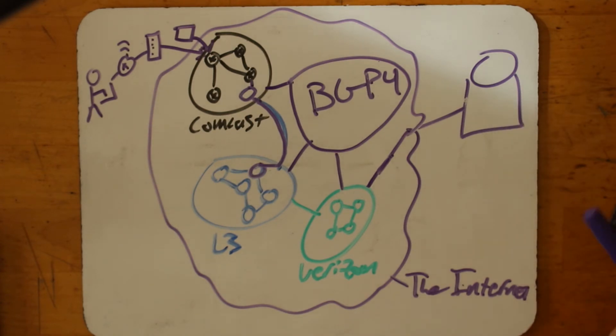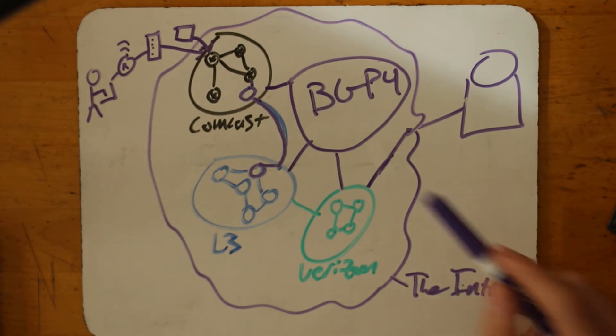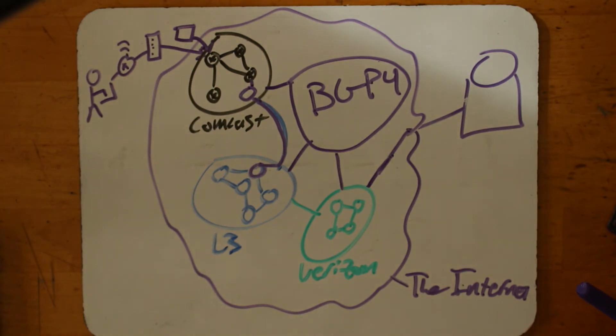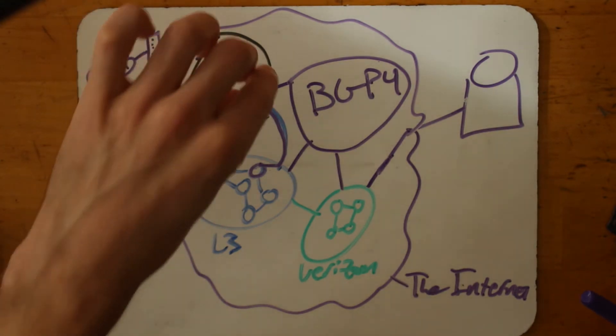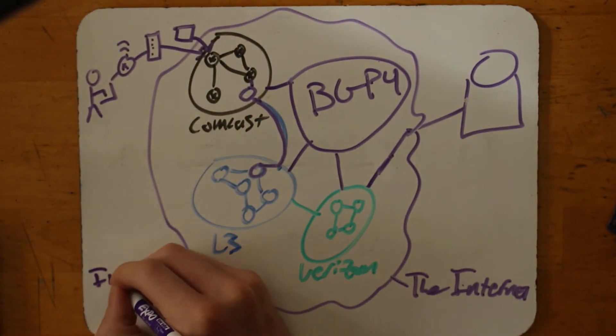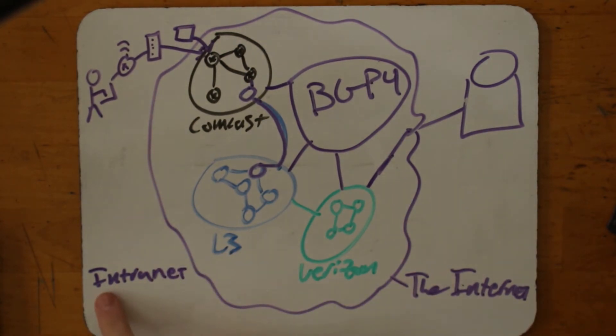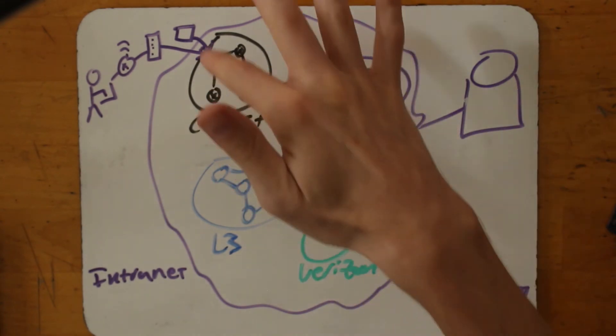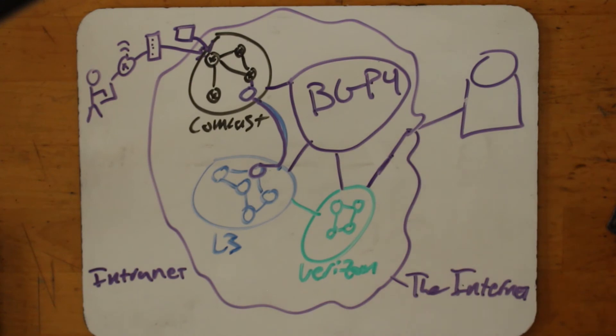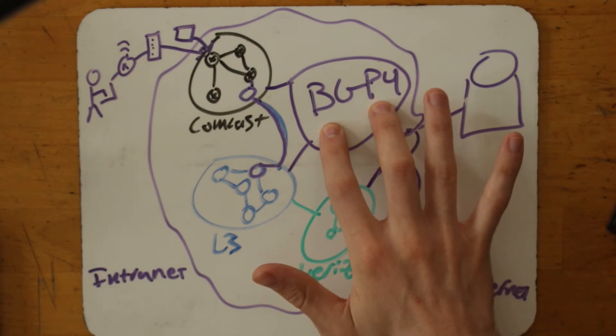So BGP is one of the most complex pieces of software that humanity has built, and it mediates all of these systems in an interesting way. So each of these systems, Comcast, L3, and Verizon in this example, are referred to in BGP terms as autonomous systems, and they behave autonomously within themselves. So this is sometimes called intranet, meaning internal to Comcast's network. Comcast can route this packet any way it wants. As long as eventually, intranet in between different networks, it follows the rules of BGP4.